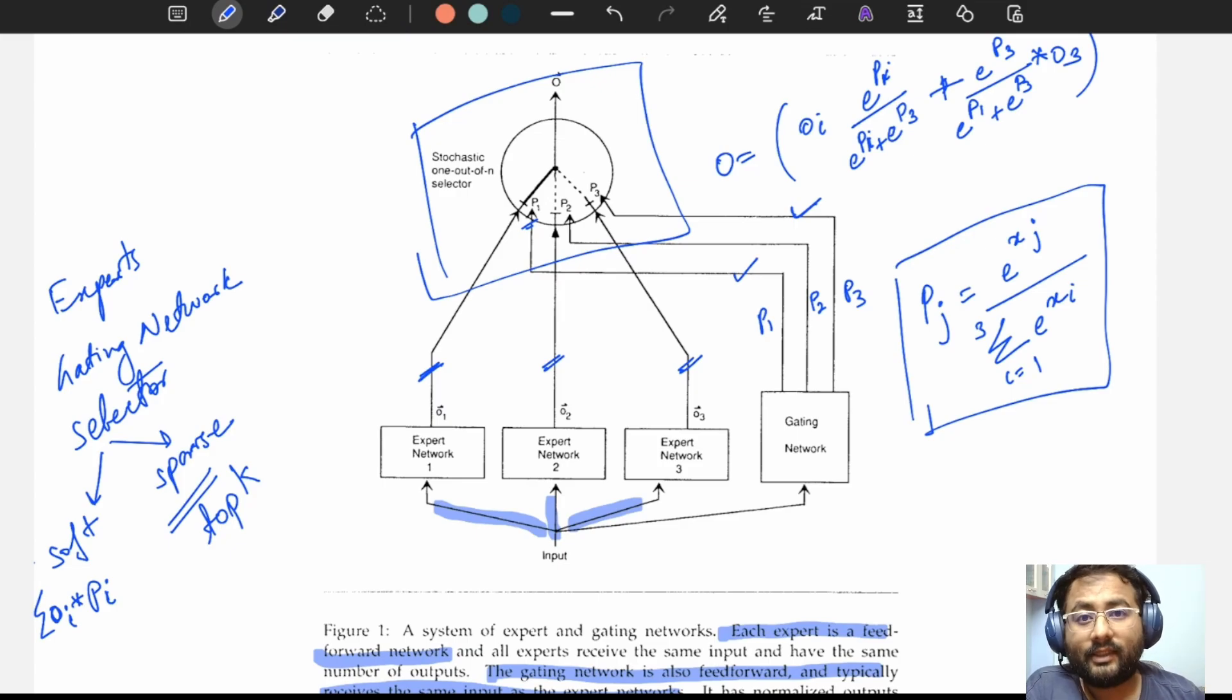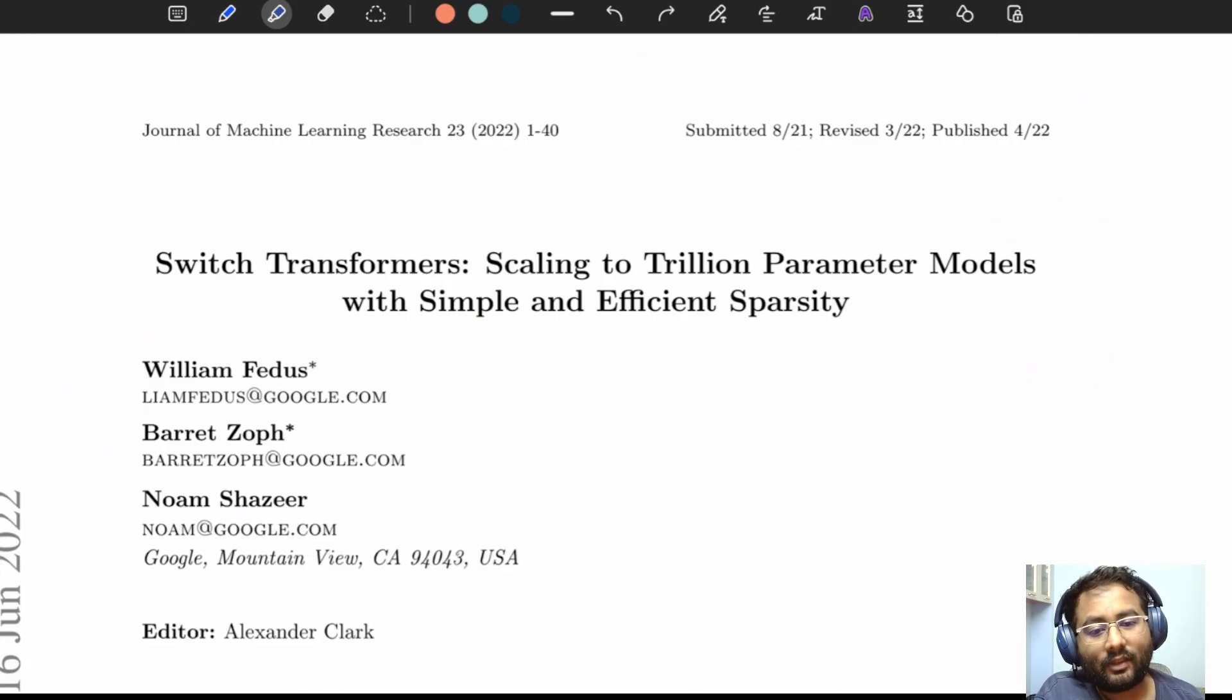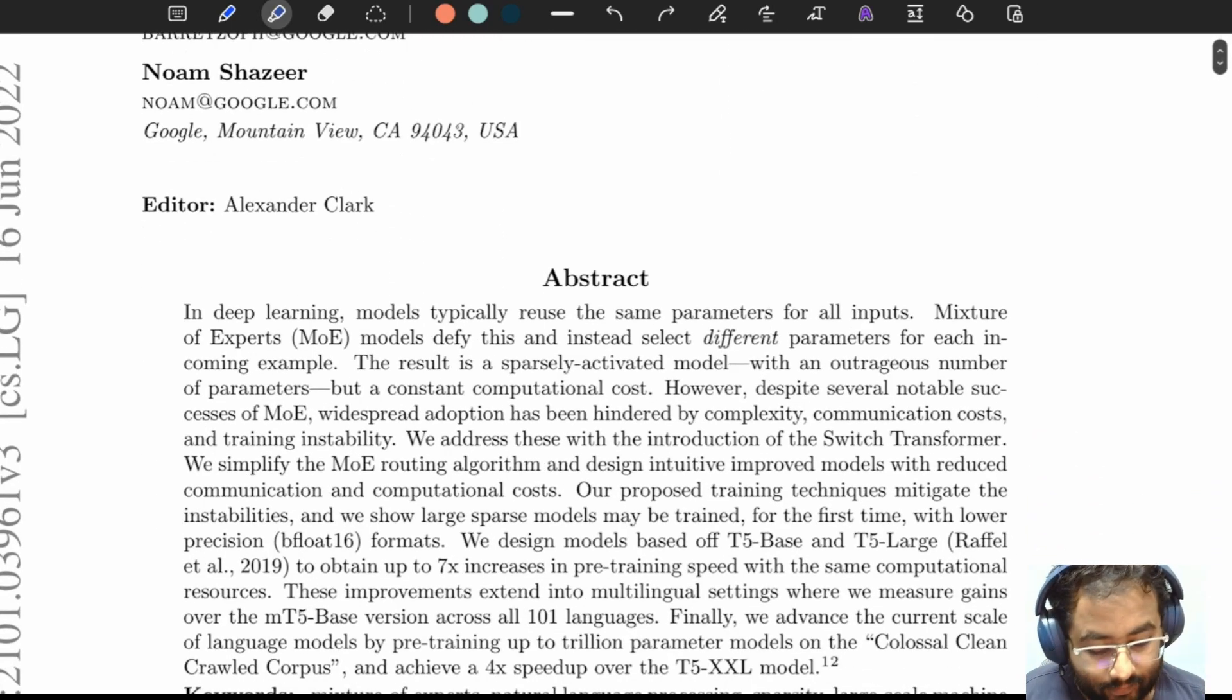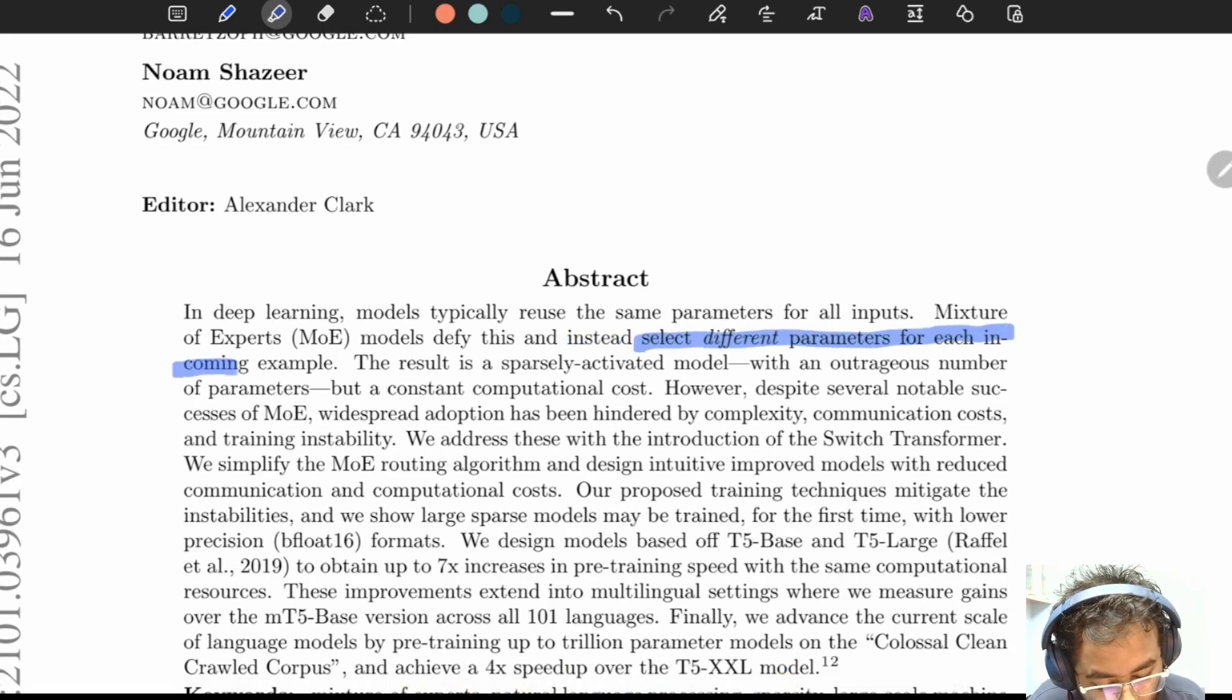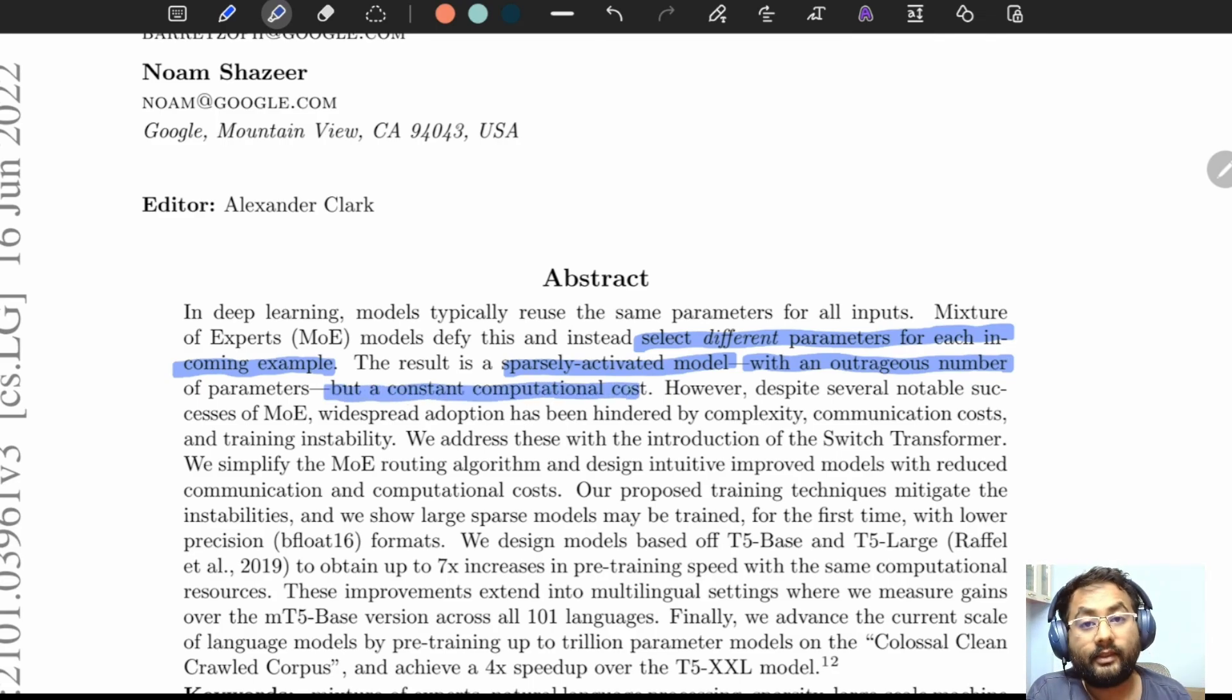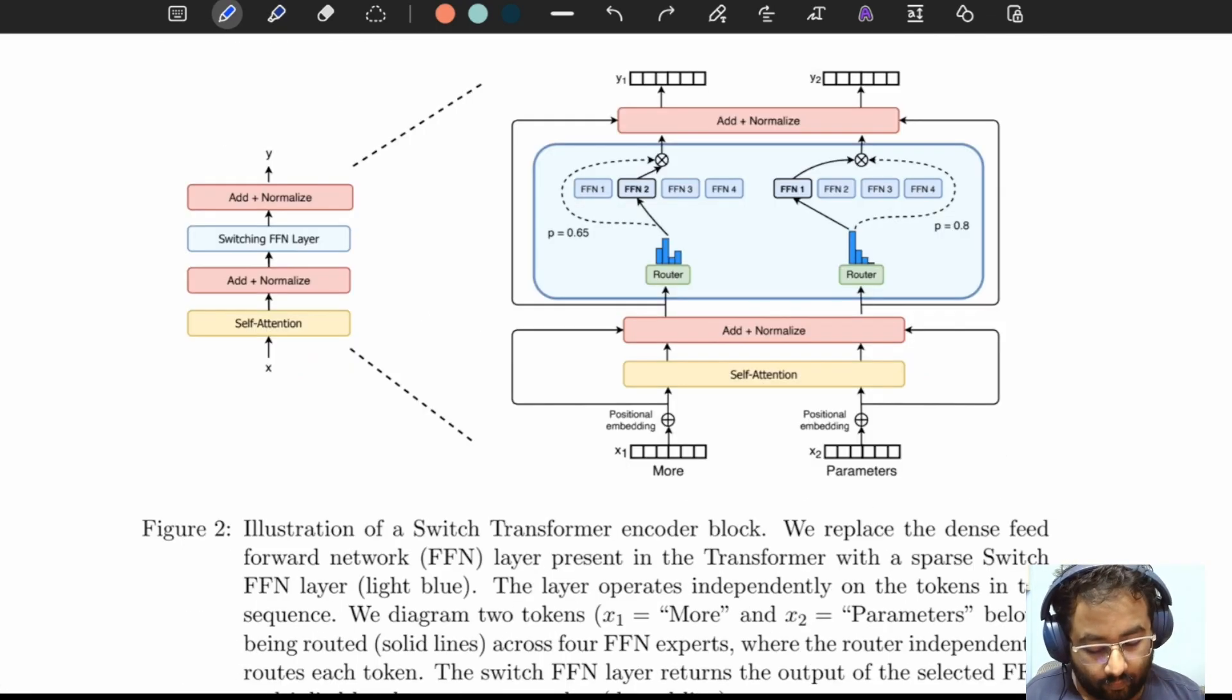The sparse mixture of experts have the benefit of activating only selective experts. This means that every input doesn't have to go through all the experts. Let's see a much more recent paper by Google to understand this in more detail. In the Switch Transformers paper, the authors say that mixture of experts models select different parameters for each incoming example and this results in a sparsely activated model. It can have an outrageously large number of parameters but it incurs only a constant computational cost.